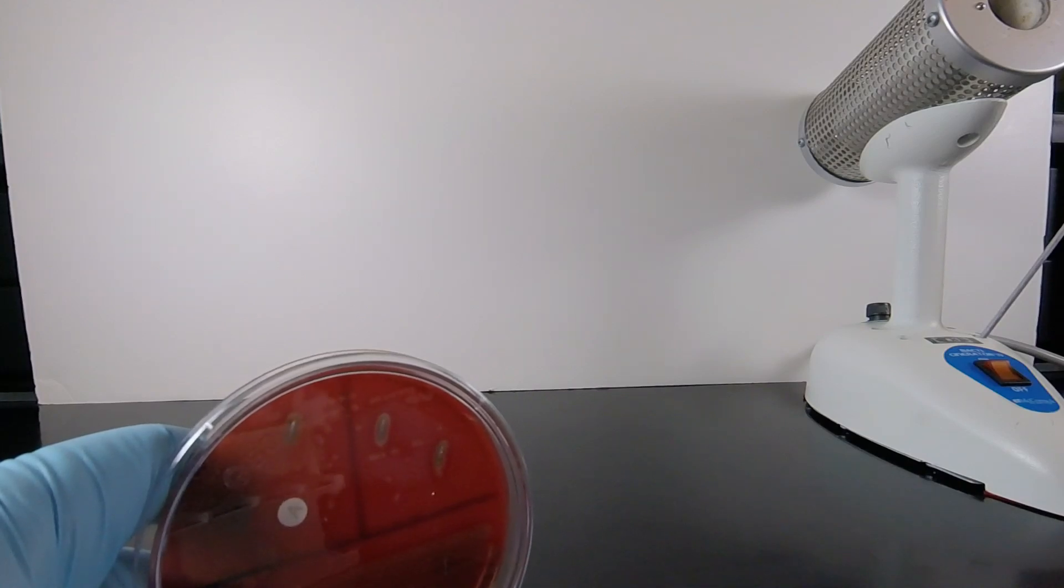In a previous video lesson, we learned how to streak a blood agar plate and place on a Taxo A disk containing the antibiotic bacitracin.